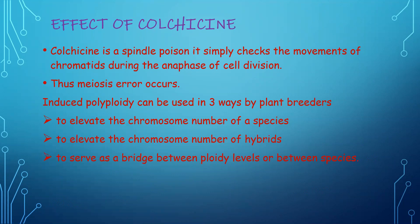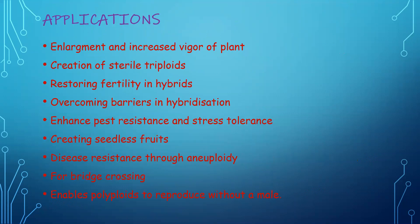This polyploid condition can be used in three ways by plant breeders: to elevate the chromosome number of a species, to elevate the chromosome number of hybrids, or to serve as a bridge between ploidy levels or between species.